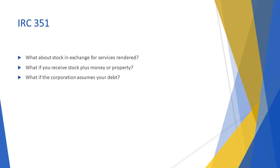What if the corporation assumes debt? If the corporation assumes your liabilities, the exchange is generally not treated as if you received money or other property. There are two exceptions. If the liabilities the corporation assumes are more than your adjusted basis in the property you transfer, gain is recognized up to the difference. However, if the liabilities assumed give rise to a deduction when paid — such as a trade account payable or interest — no gain is recognized.